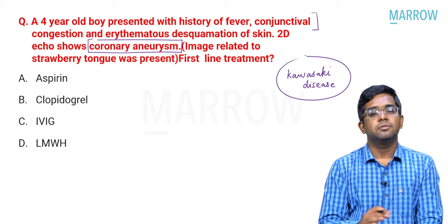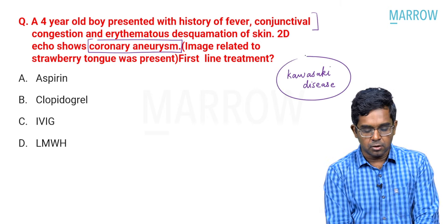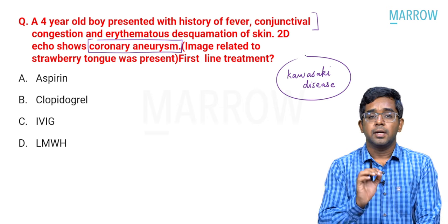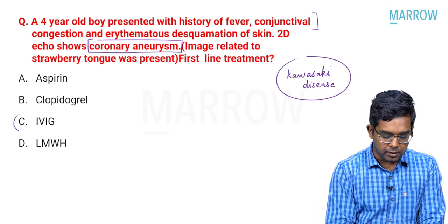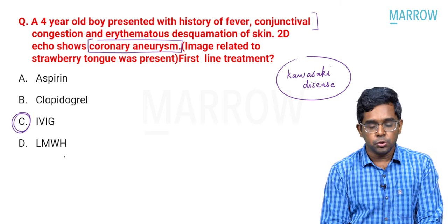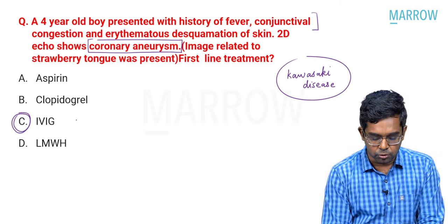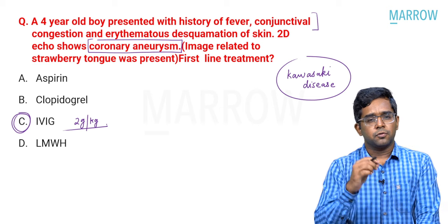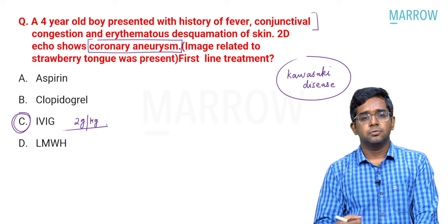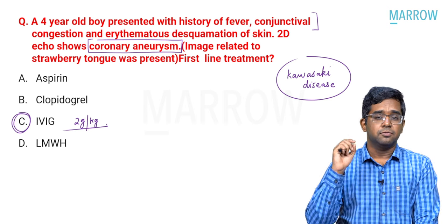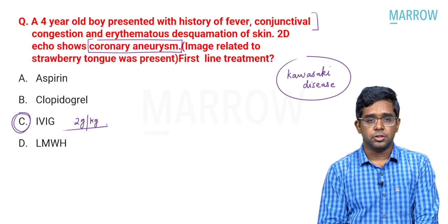For Kawasaki disease, what should be the first-line treatment — aspirin, clopidogrel, IVIG, or low molecular weight heparin? It is obviously IVIG, given in a dose of 2 g/kg, which is the treatment of choice. Of course, aspirin is also used for its anti-inflammatory effect; however, it is not the first choice. First choice is always IVIG.